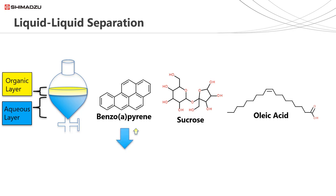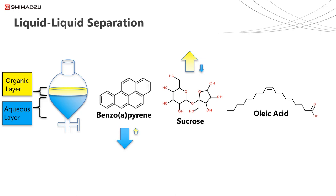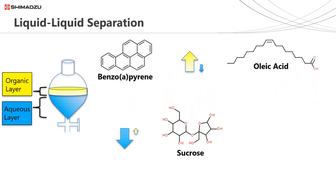Compounds which are polar, hydrophilic or ionic in nature are likely to favour the aqueous layer over the organic layer. Whereas compounds which are fatty, hydrophobic or non-polar in nature are likely to favour the organic layer over the aqueous layer. So benzopyrene and oleic acid, which are very fatty compounds, favour the organic layer, and sucrose, which is very polar, favours the aqueous layer.